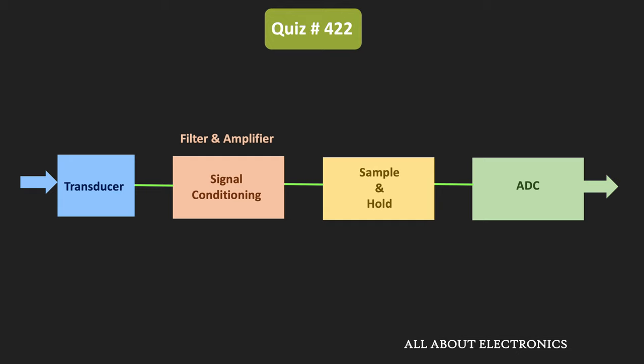After that, it also has a signal conditioning block, which typically consists of filters as well as amplifiers. Once the signal passes through the signal conditioning block, it is given to the sample and hold circuit. This sample and hold circuit samples the data at particular intervals, and then the sampled data is given to the ADC, which converts the analog voltage into digital form.